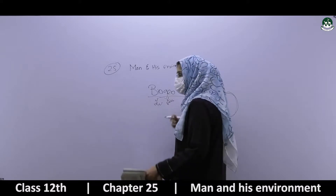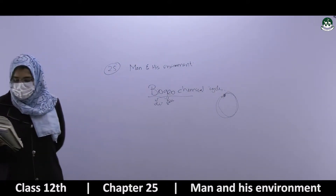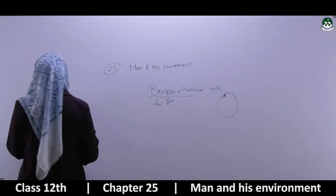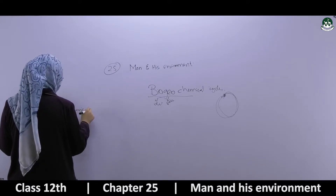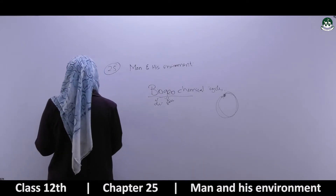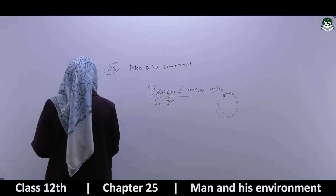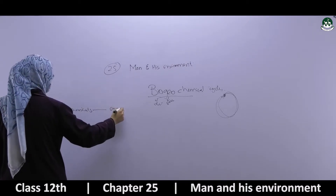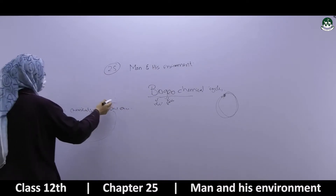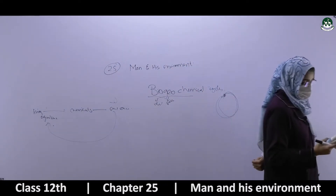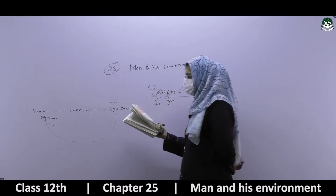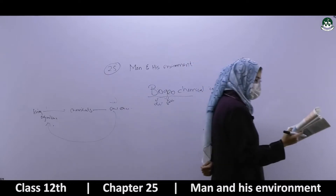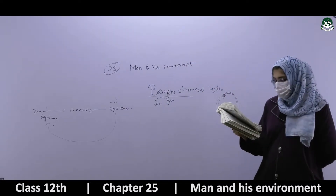Bio means living organism. The flow of chemical elements and compounds between living organisms and their physical environment is known as a biogeochemical cycle. The definition is: chemicals absorbed or ingested by organisms are passed through the food chain and returned to the soil, air and water by processes such as respiration, excretion and decomposition.